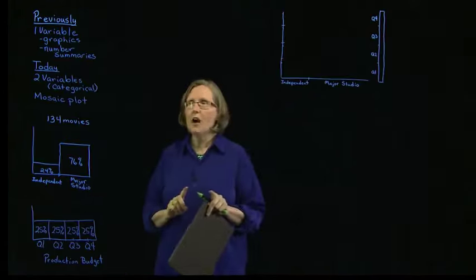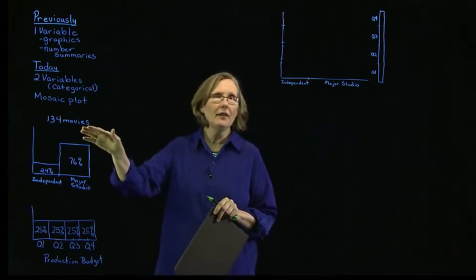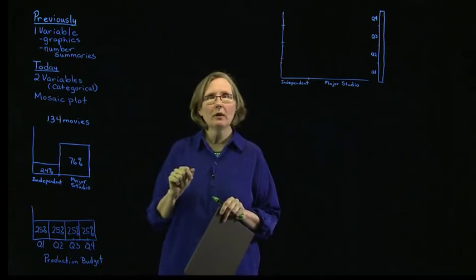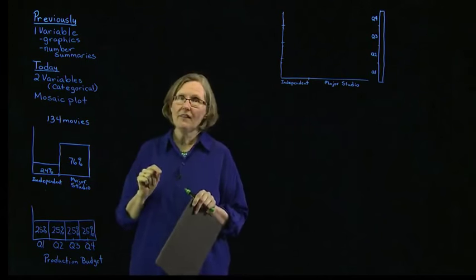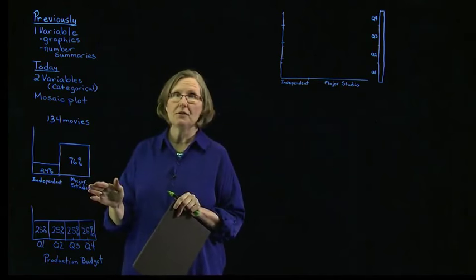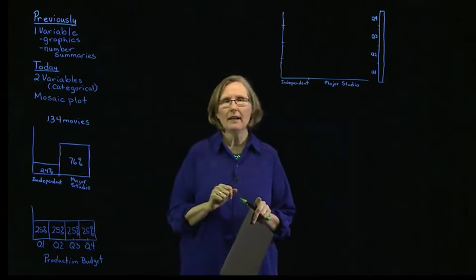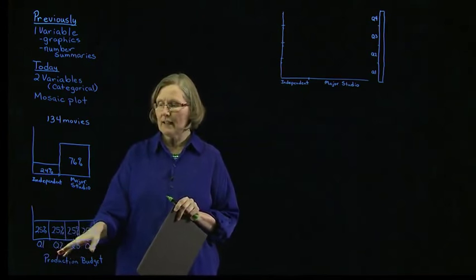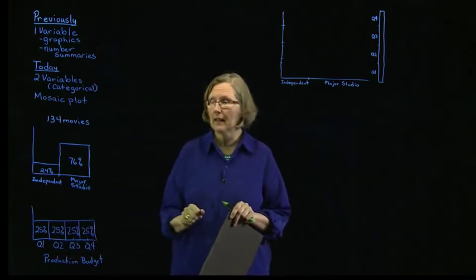We're going to use our movie data set. Recall there were 134 movies. I want to look at the relationship between whether a film was produced either by an independent or a major studio, and how that relates to whether the production budget fell into the first, second, third, or fourth quartile.